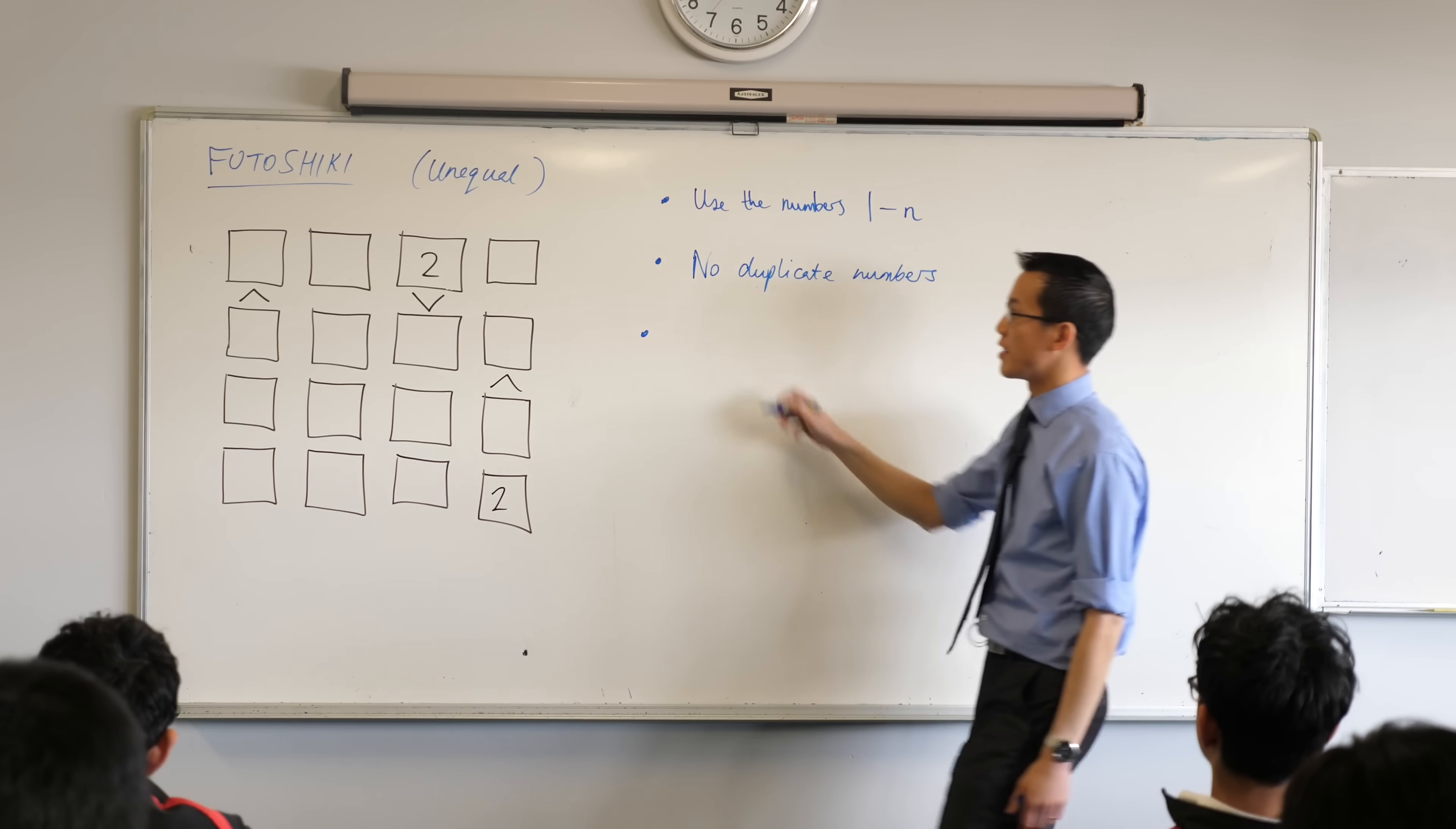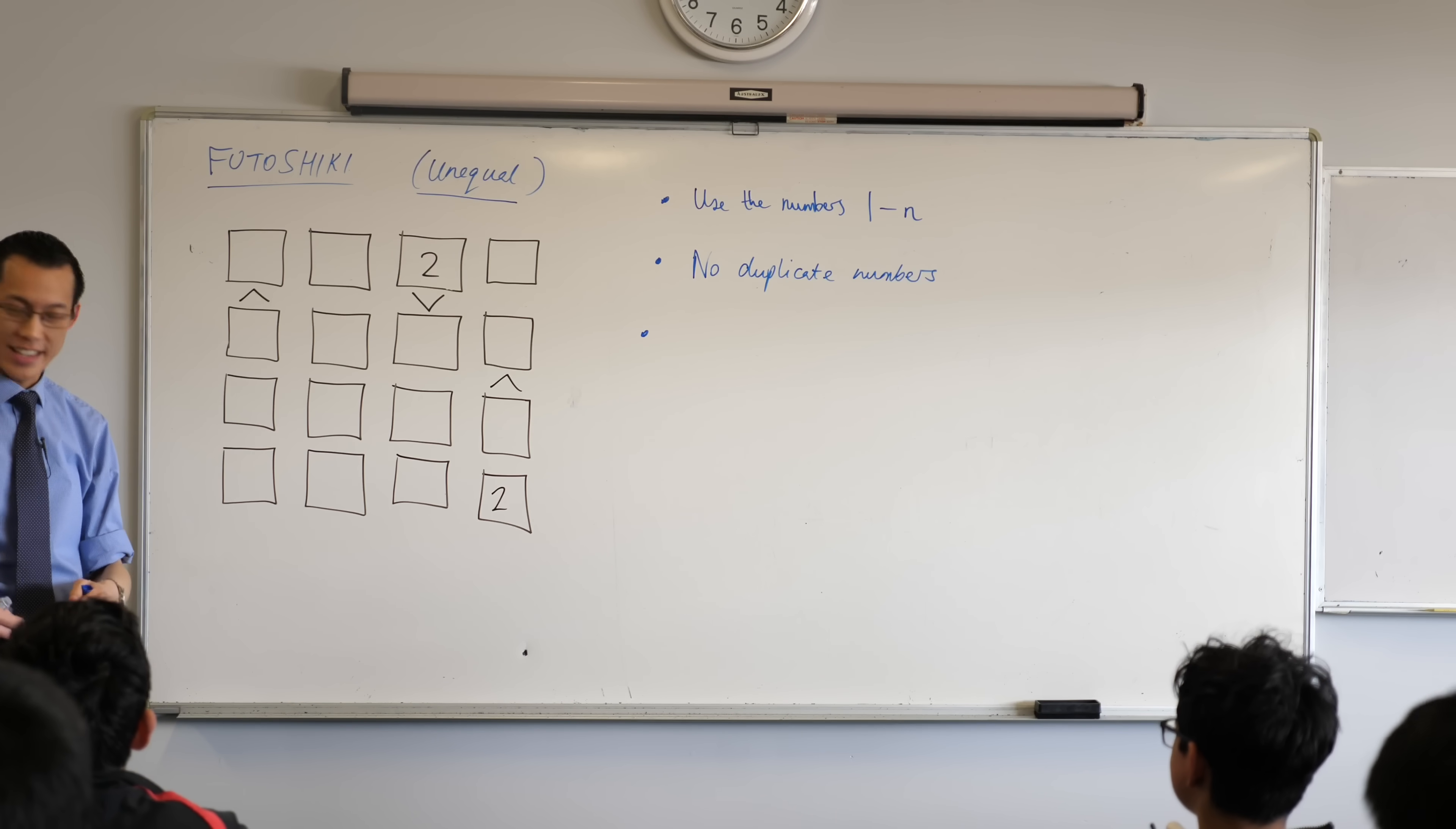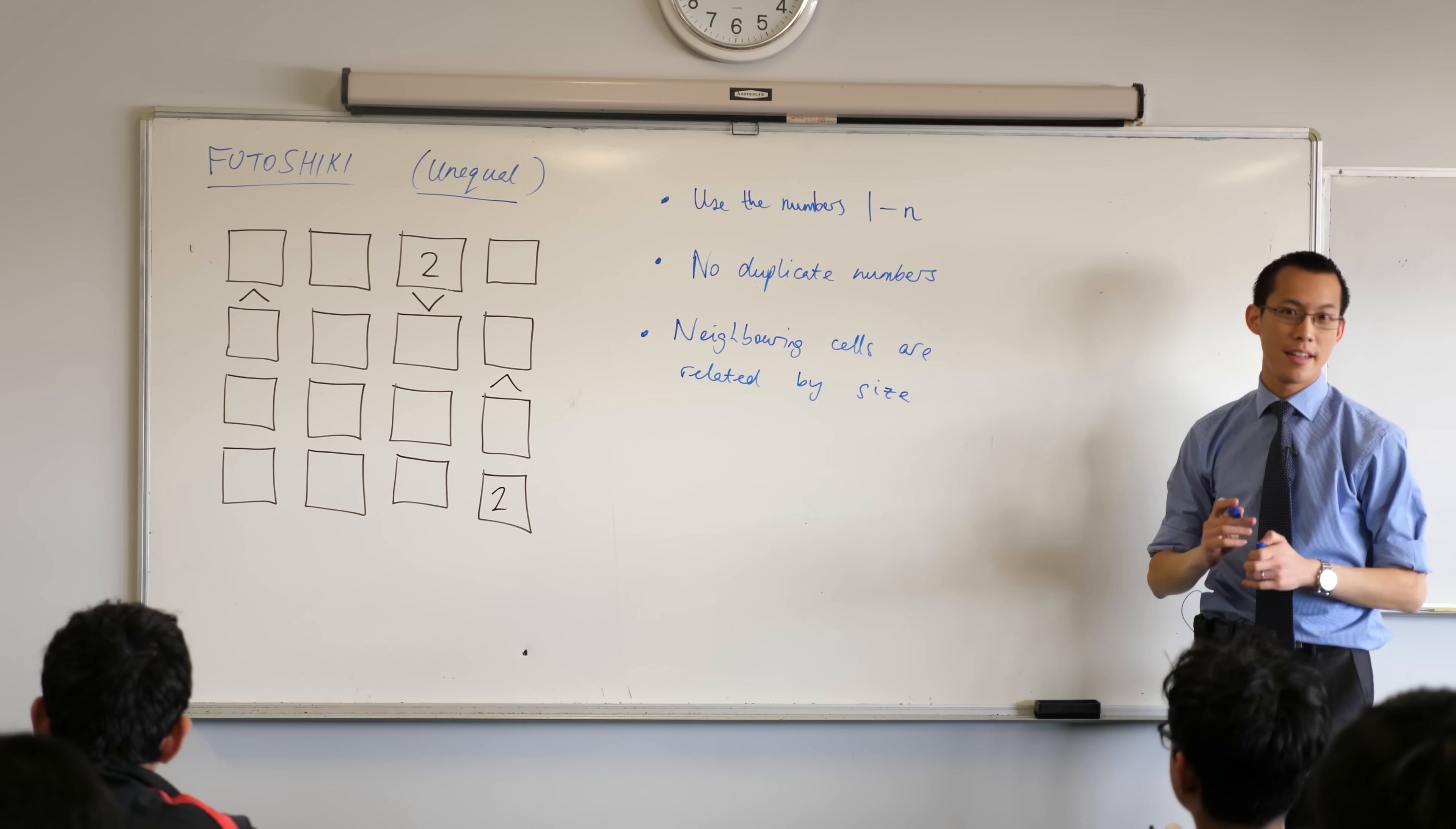Okay, now the last rule is the most important one and it's where the puzzle gets its name. So you can see those arrows that are there on the board, yeah? What the arrows indicate is the relationships between two neighbouring cells and it just tells you which cell is bigger. Let me say that again. This arrow just relates these two cells together, none of the other ones in the column, just the next door ones, the neighbouring cells, and it tells you which cell is bigger. So neighbouring cells are related by size. Not all of them, I should point out. You might notice there are not arrows going everywhere, but there are enough arrows along with these other rules to work out everything that needs to go in here.